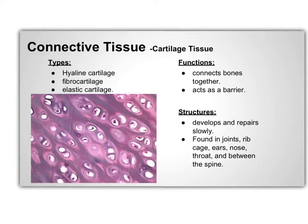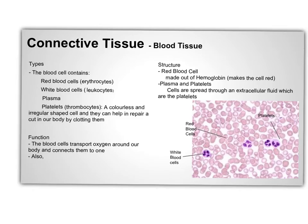Cartilage tissue is an example of connective tissue. It is a whitish, flexible connective tissue divided into three types: hyaline cartilage, fibril cartilage, and elastic cartilage. This tissue connects bones together and acts as a barrier that keeps bones from rubbing against each other. Cartilage tends to develop and repair slower compared to other connective tissues. It is found in joints, the rib cage, ears, nose, throat, and between the spine.